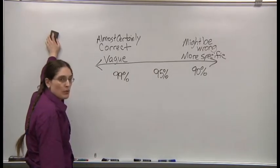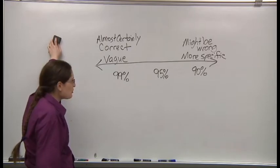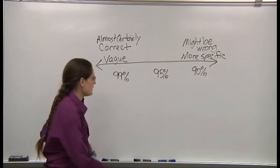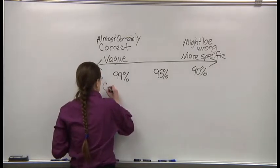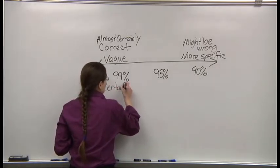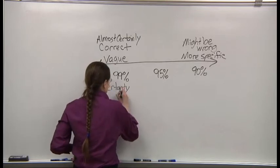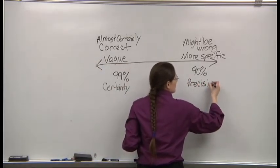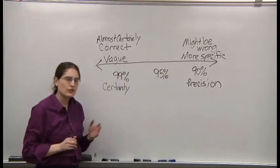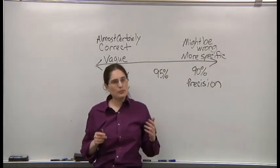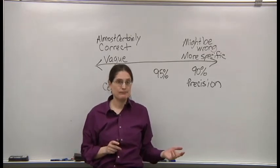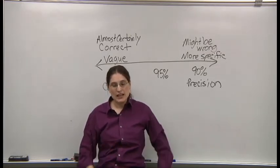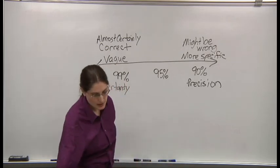We call this the balance between precision and certainty. So what if I want to be both precise and certain? I guess you need a pretty good experiment to make that happen.